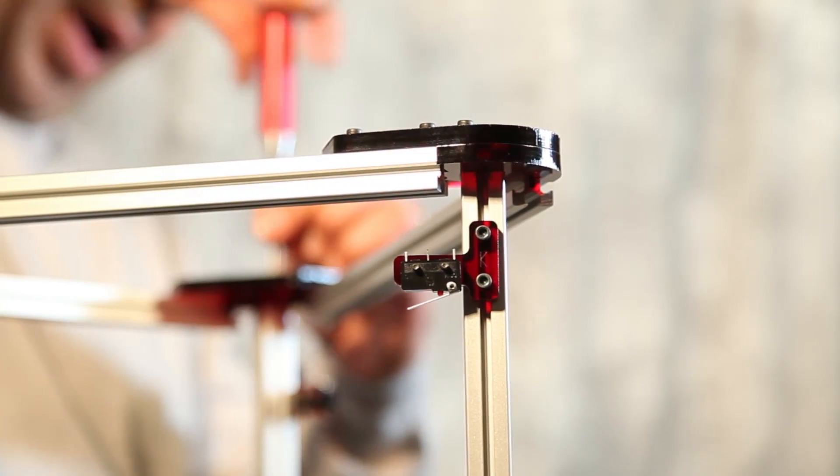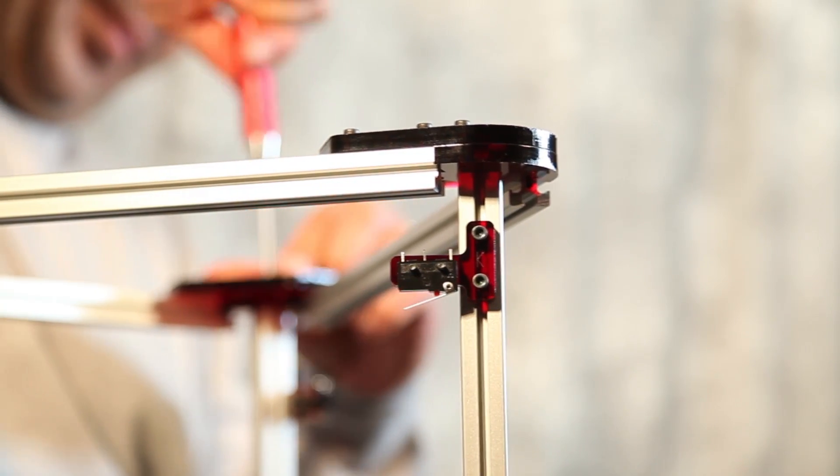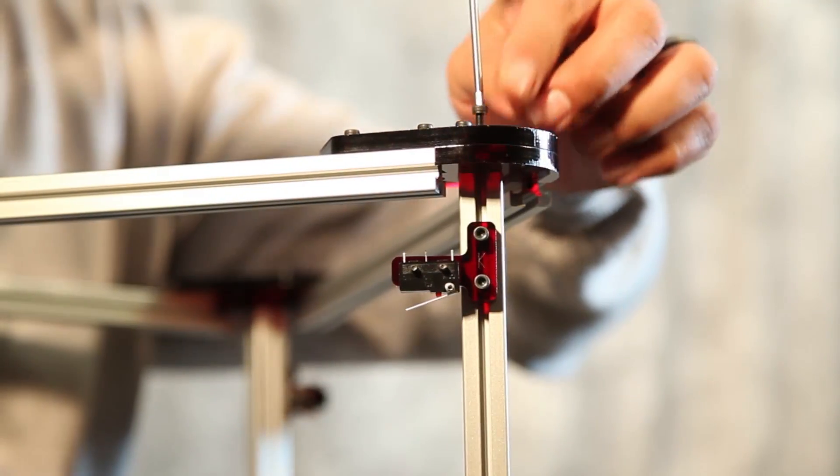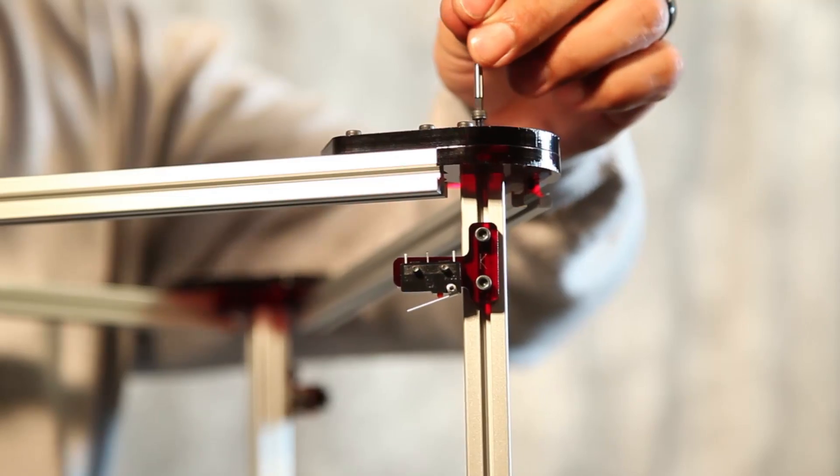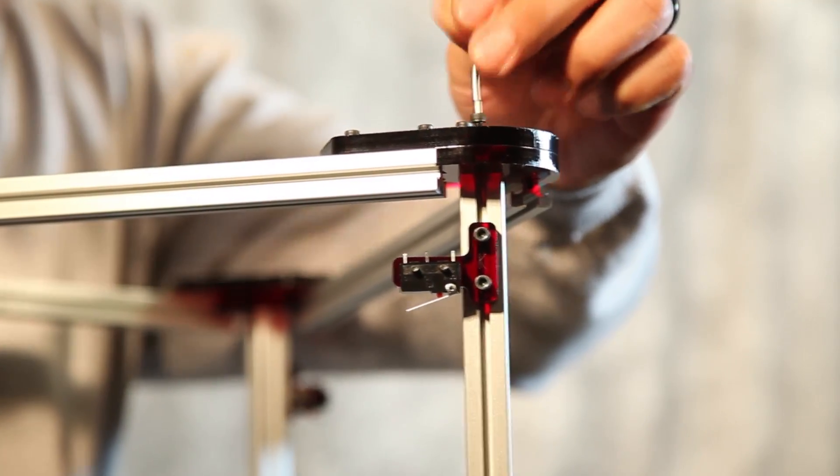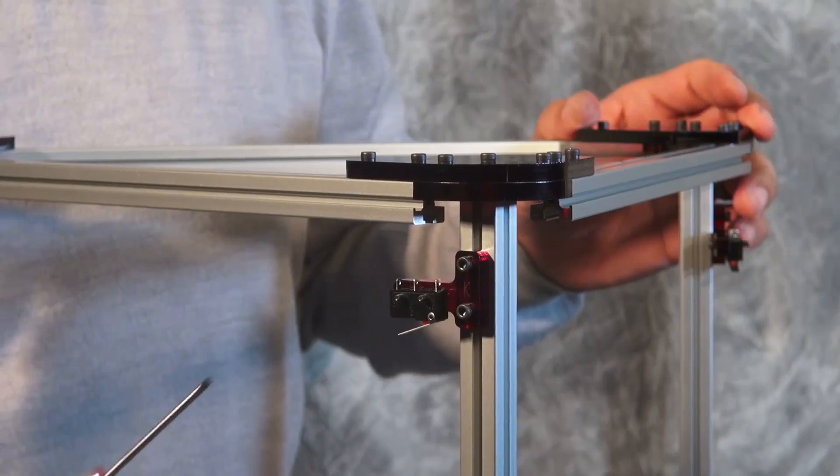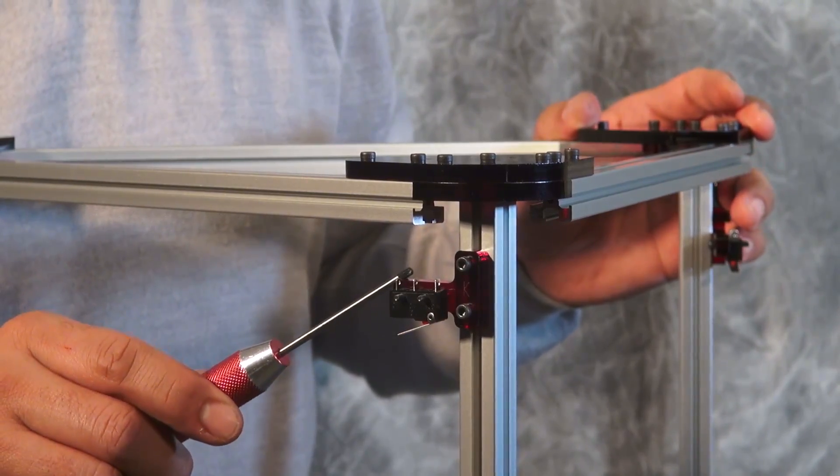Using my M3 by 16 millimeter bolt, I'm going to secure the top mount on all three corners. Now that we've installed the top bracket, we're going to take this time to adjust our mechanical end stops.